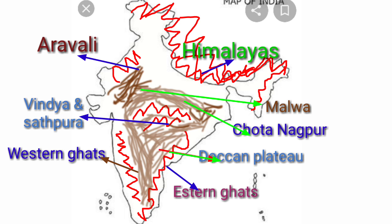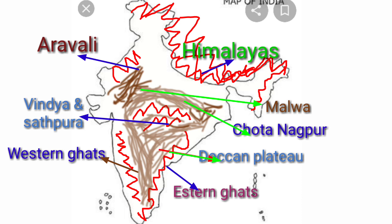On the south side, the Deccan Plateau. Now we are going to learn about plateaus. Deccan Plateau, Chota Nagpur Plateau, and Malwa Plateau. All of you find the plateaus in the India map. The indicators show the plateaus.